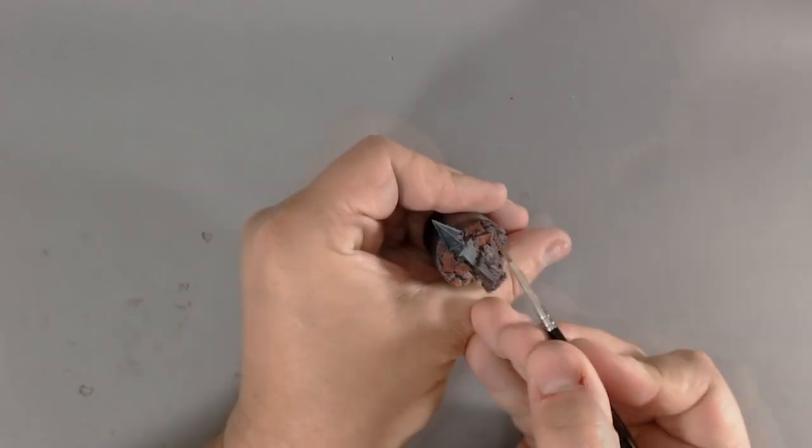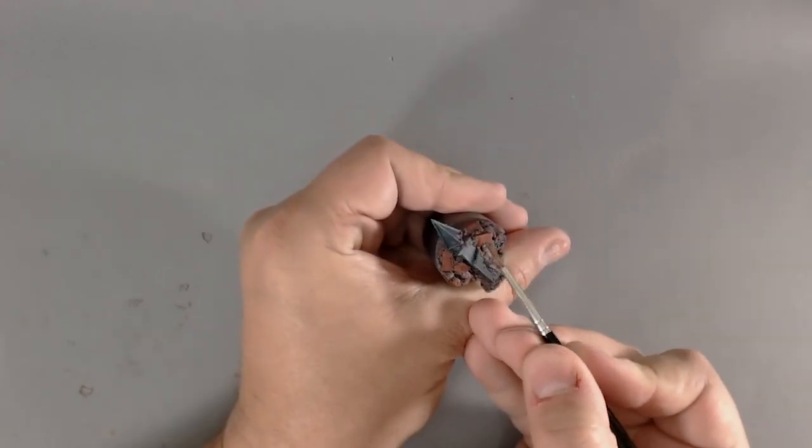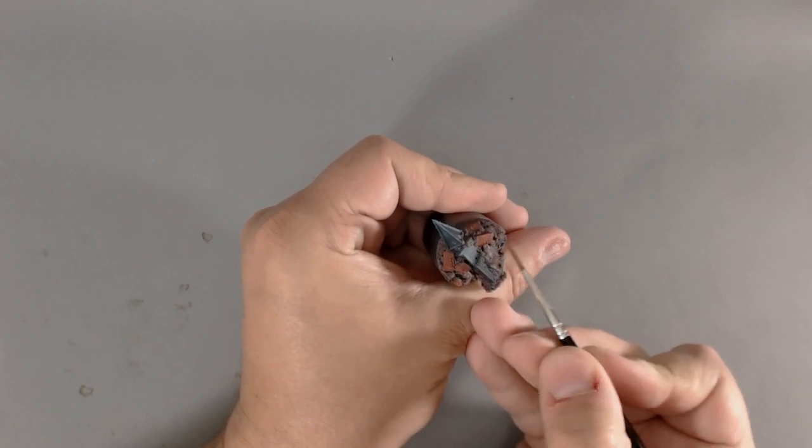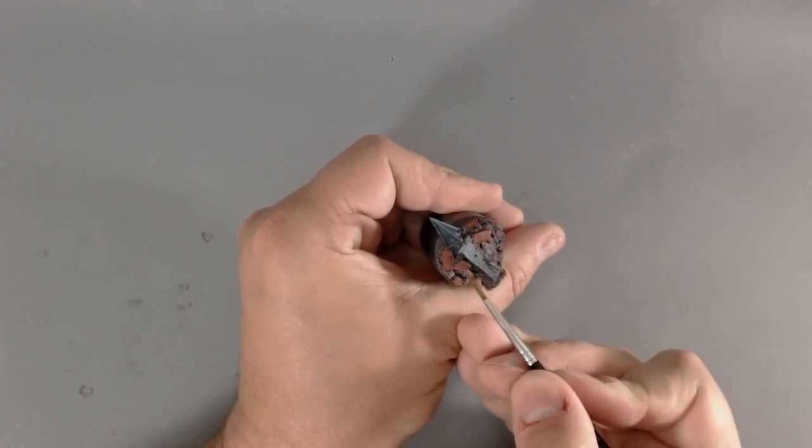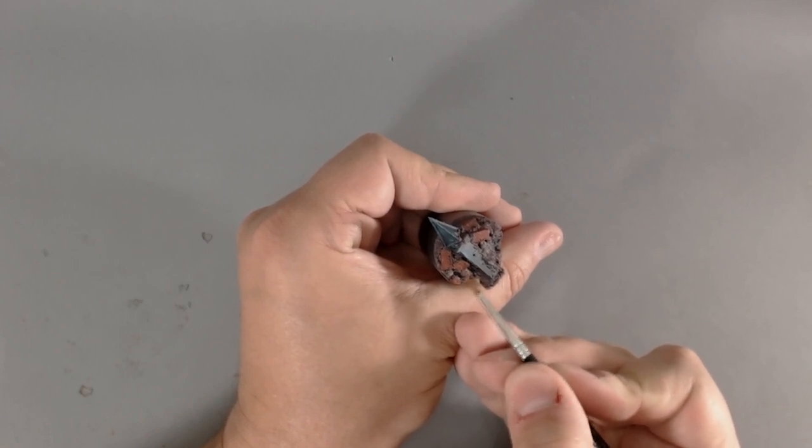I'm using a mix of Vallejo's Rose Brown and Vallejo Panzer Aces Shadow Flesh to add a highlight to the red bricks. It should be a nice orangey skin tone really.